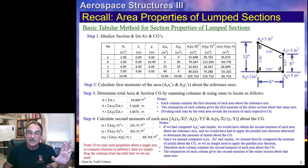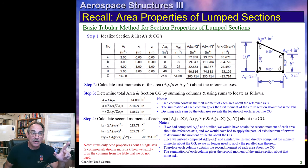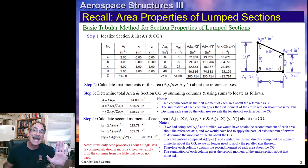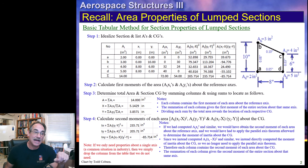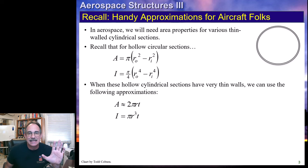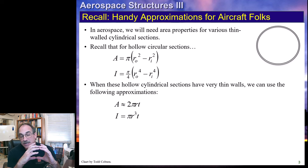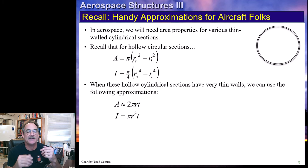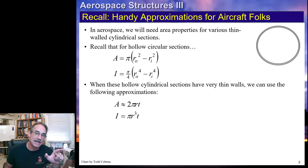If you already know how to evaluate structural properties—both calculating section properties and stresses due to bending—then you can continue on; otherwise go back and review that. This slide reminds us how we can idealize thin cylindrical sections: approximate area, approximate moment of inertia. We can use these relations to save time in hand analysis and when developing properties for a finite element model.